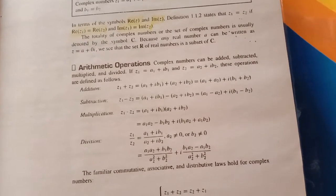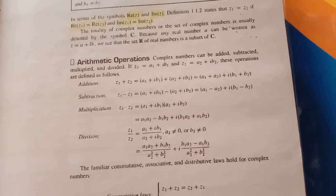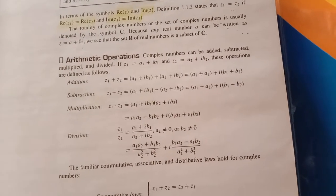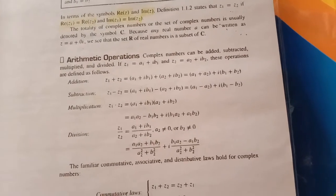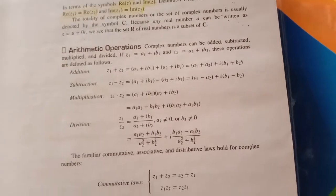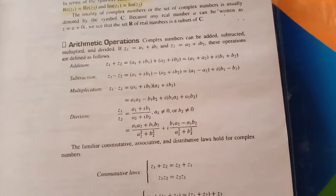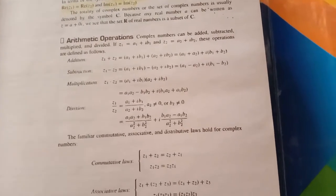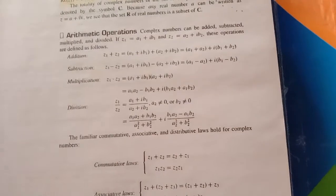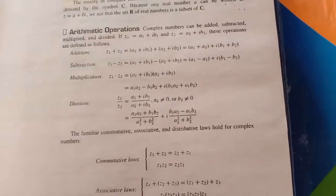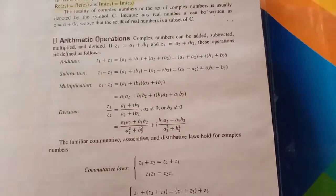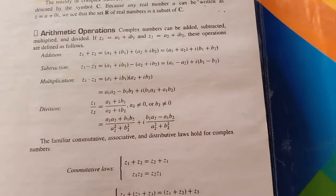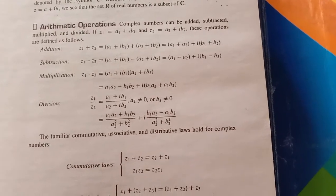Yaha par ham real part ko real part ke sath add karte the aur imaginary part ko imaginary part ke sath add karte the. Ham kis tarah karenge? To do complex numbers ham kis tarah multiply karenge? To ham usko jis tarah ham ne multiplication of the two real numbers pada tha, isi tarah ham yaha par bilkul wohi tarah hogi ki do complex numbers ham kis tarah multiply karenge.